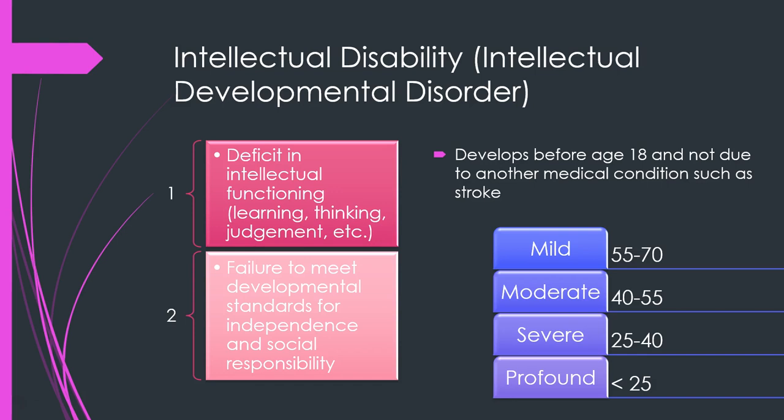Intellectual disability — please do not call it mental retardation. The appropriate term is intellectual disability or intellectual developmental disorder. It involves a deficit in intellectual functioning with things like learning, thinking, or judgment, and a failure to meet developmental milestones for independence and social responsibility. It has to develop before age 18 and not be due to another medical condition like a stroke. There are different levels — mild, moderate, and severe — with corresponding IQ ranges.